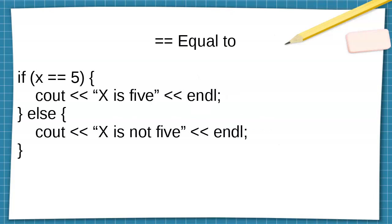The equal-to sign: if x equals five — not a single equal, it's double equal — because the single equal would be assigning x to equal five. So double equal is checking to see if x is equal to five. So if x equals five, then we print 'x is five', otherwise 'x is not five'.